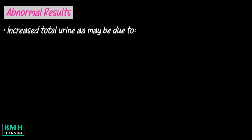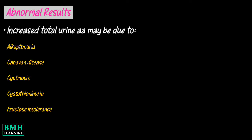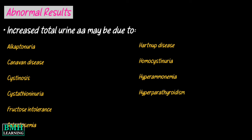What do abnormal results mean? Increased total urine amino acids may be due to alcohol, alkaptonuria, Canavan disease, cystinosis, cystathioninuria, fructose intolerance, galactosemia, Hartnup disease, homocystinuria, hyperammonemia, hyperparathyroidism, maple syrup urine disease, and others.